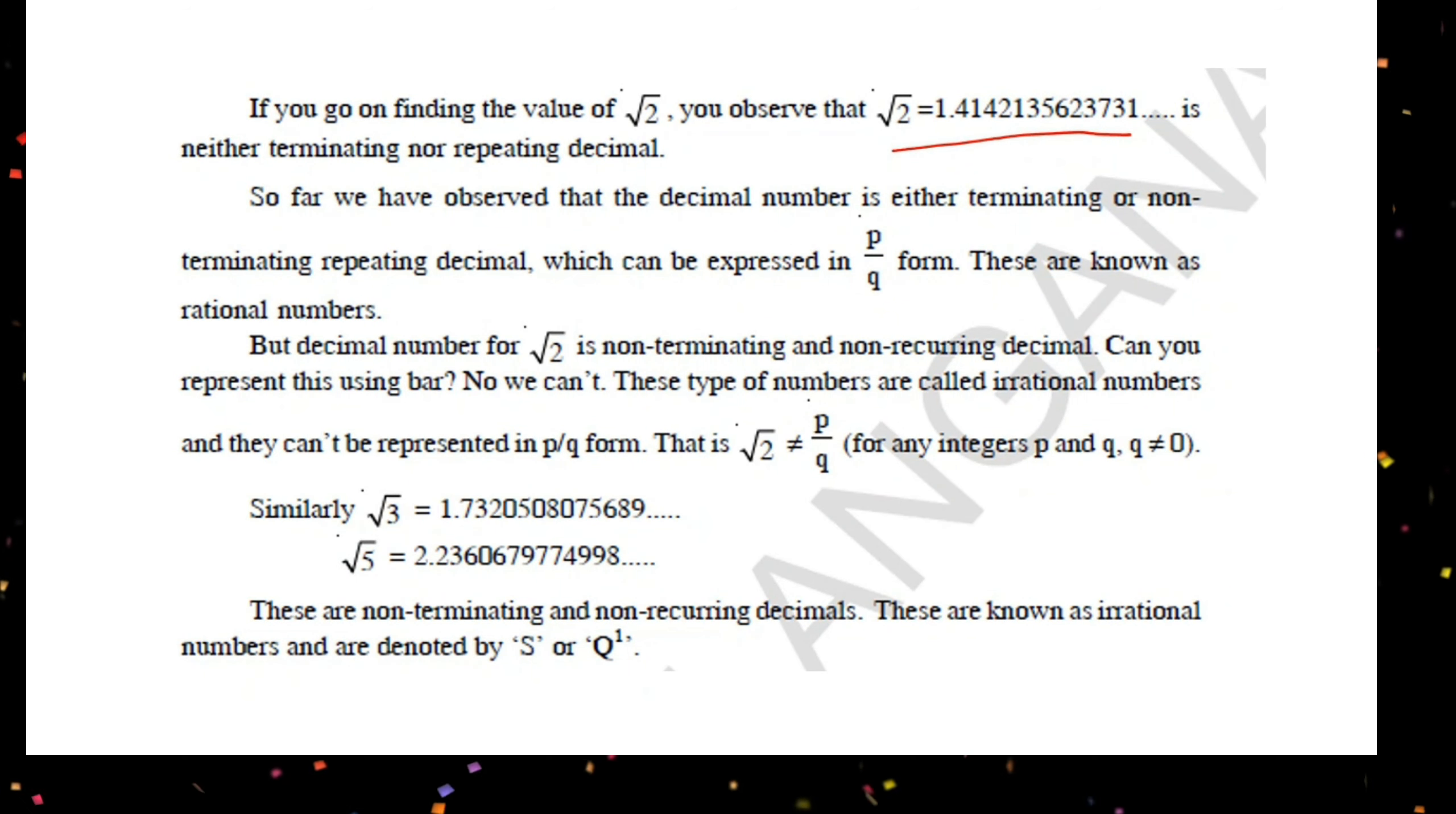We observe that terminating or non-terminating repeating decimals can be expressed in p by q form - these are rational numbers. But root 2 is a non-terminating, non-recurring decimal. Can we represent this on a number line using a bar? No, we cannot. This type of numbers are called irrational numbers.